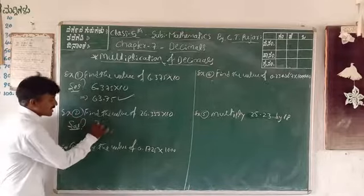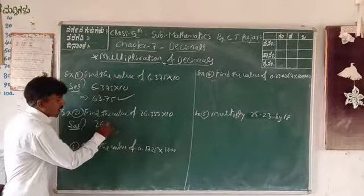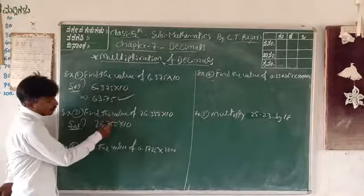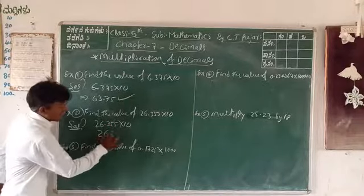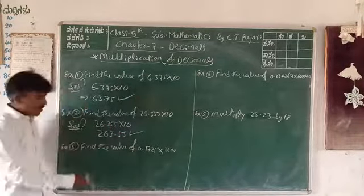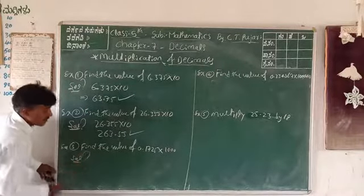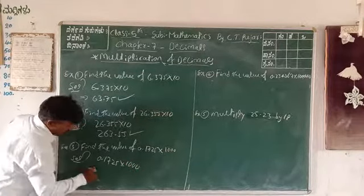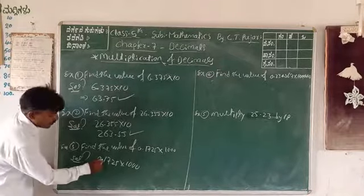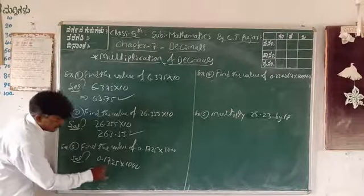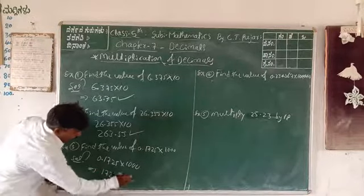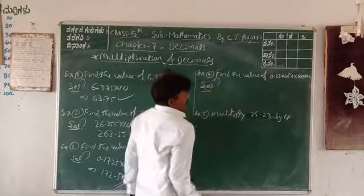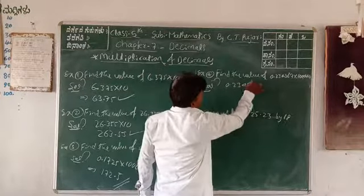Second example: 26.355 × 10. Move the point one digit right — answer is 263.55. Third example: 0.1725 × 1000. There are three zeros, so move the point three digits to the right: 1, 2, 3 digits — answer is 172.5. Fourth question: 0.23456 × 100000. Five zeros means move point five digits right — answer is 23456.0.